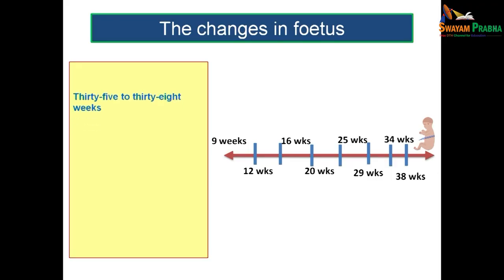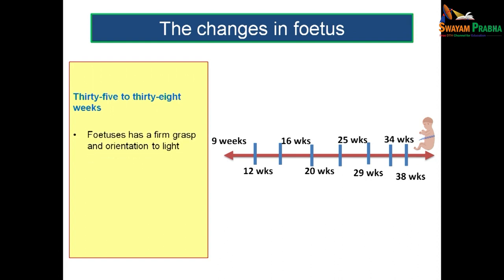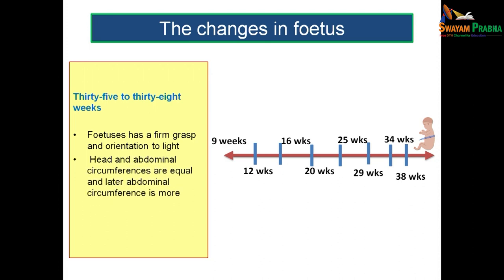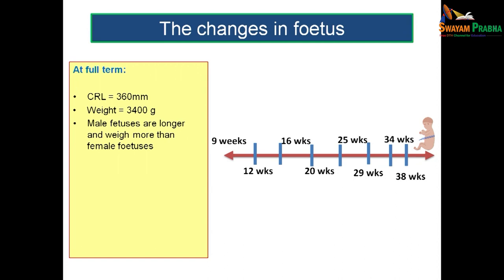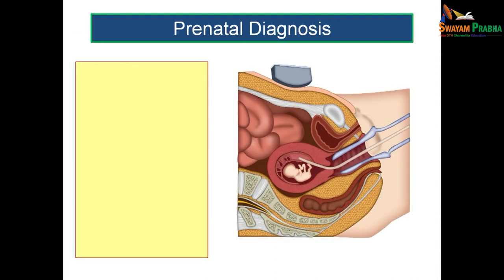From 35 to 38 weeks, the fetus develops a firm grasp and becomes oriented to light. The head and abdominal circumferences are almost equal, and later the abdominal circumference exceeds the head circumference. At full term, the CRL is estimated at 360 mm, the weight is expected to be 3.5 kg, and male fetuses are slightly longer and heavier than females. The testes reach the scrotum at the time of birth.